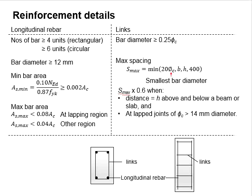For the reinforcement in columns, there are longitudinal rebar and links. For a square and rectangular column, you need at least four units of the longitudinal bar, one at each corner.